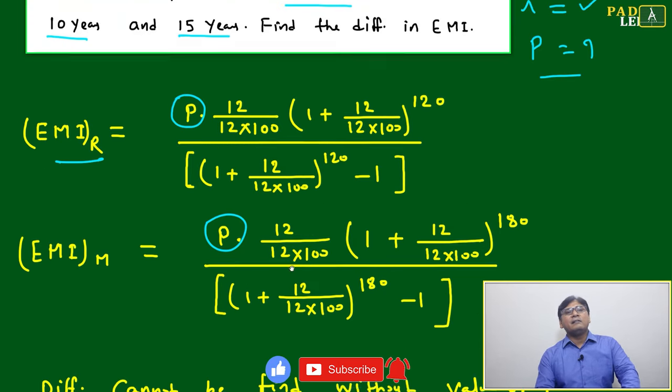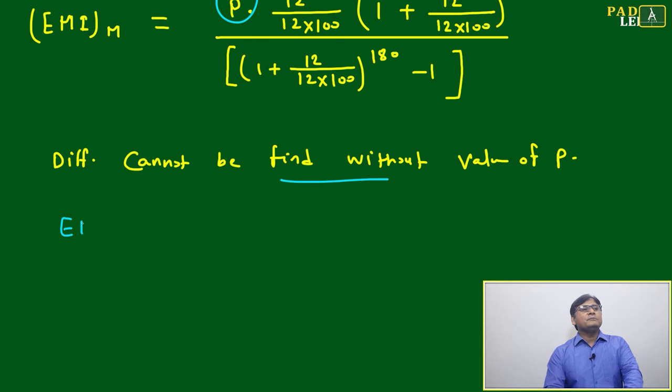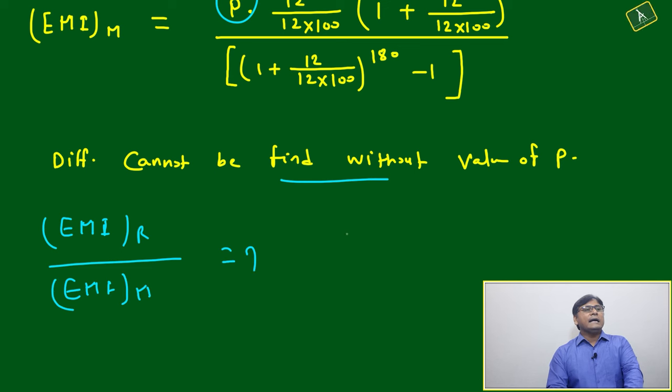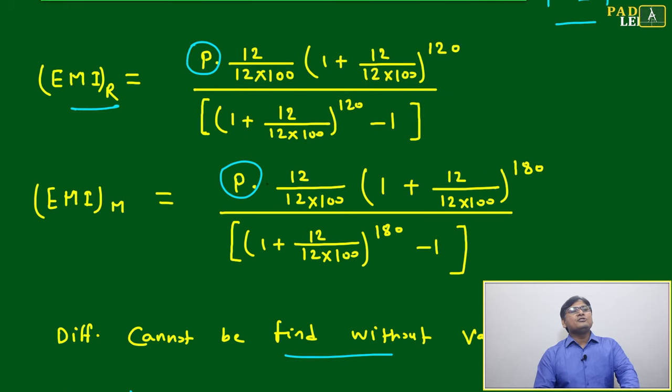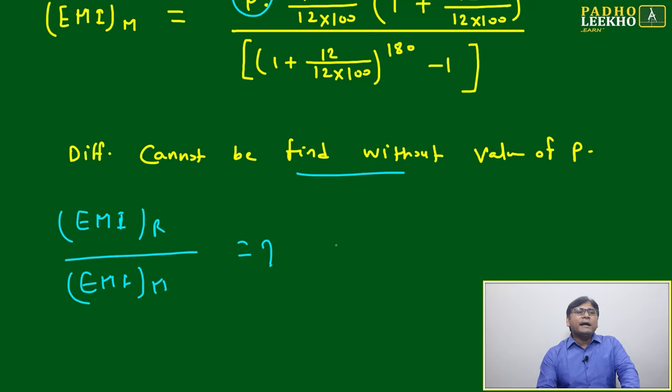Only we can find here the ratio between EMI. This we can find: EMI of Ram and EMI of Mohan, that we can find. Because once we take it in the form of a ratio, P and P will be cancelled out. That we can find.